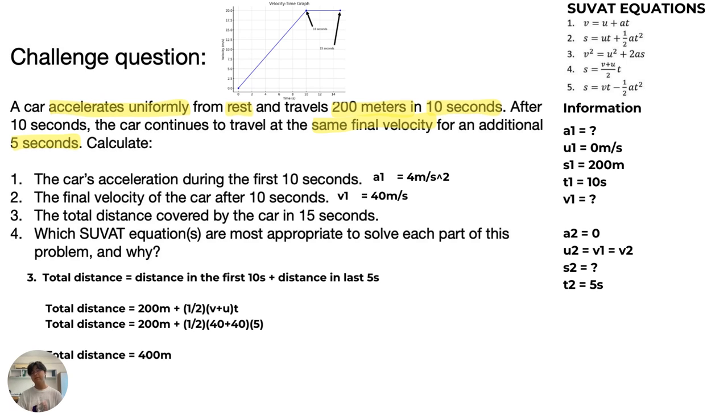To calculate the distance in the next five seconds, you can see that we already have the information of time, initial velocity, and final velocity, which are both the same. So we can just use s = (v + u)t / 2. Put it in, and then we are able to find the total distance of 400 meters.